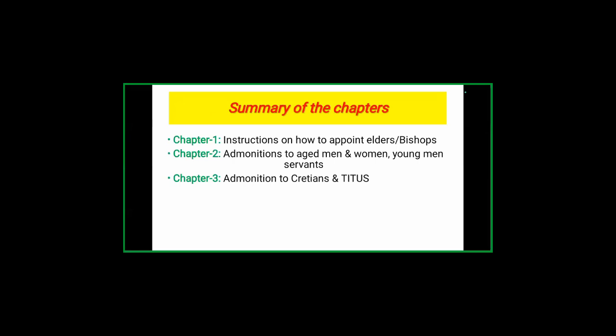There are three chapters. Chapter one covers instructions on how to appoint elders or bishops. Chapter two covers admonitions — instructions given by Paul to Titus to pass on to aged men, aged women, young men, and servants. Chapter three is a combination of chapters one and two — a reminder given to the people in Crete, called Cretians — and at the conclusion of the letter, some instructions are also given to Titus.